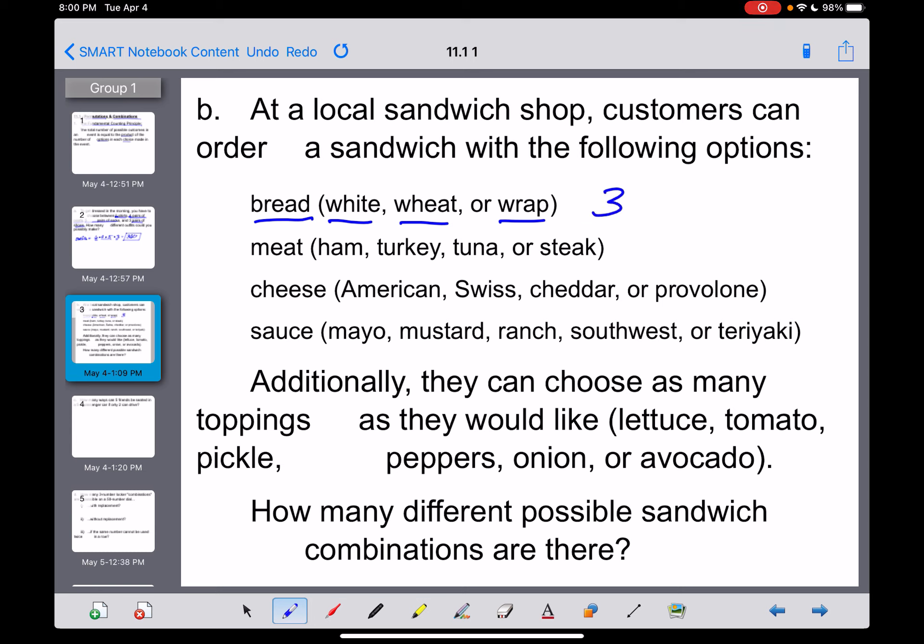For starters, you get to pick which bread you want, and the sub shop here has white, wheat, or wrap. So there's three different options you could choose for bread. For meat, you could do ham, turkey, tuna, or steak. We've got four options right there. Cheese, one, two, three, four options there. You can put a sauce on there, mayo, mustard, ranch, southwest, or teriyaki, which I hope I spelled right. And there's five options right there. Now at this point, this seems like the last problem all over again. We would just multiply the three times four times the four times the five and get, I think, 240 right there. But now the plot thickens a little bit.